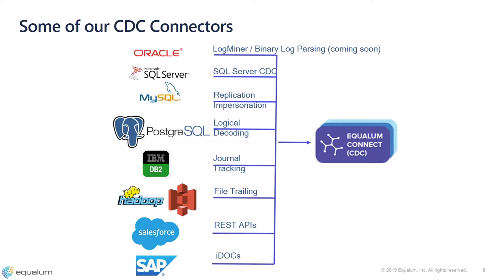Our CDC connector list is definitely not exhaustive — this is just a few that might be interesting. We have relational databases as well as files and applications. In order to do CDC for relational databases, each one has a similar concept — binary logs, write-ahead logs, transaction logs, or redo logs; each platform calls them something different. These are the consistency layer of that database. They log every action done on the database not for CDC, but for recovery purposes — so whenever the database fails, you can roll back or roll forward the data to a consistent point in time.